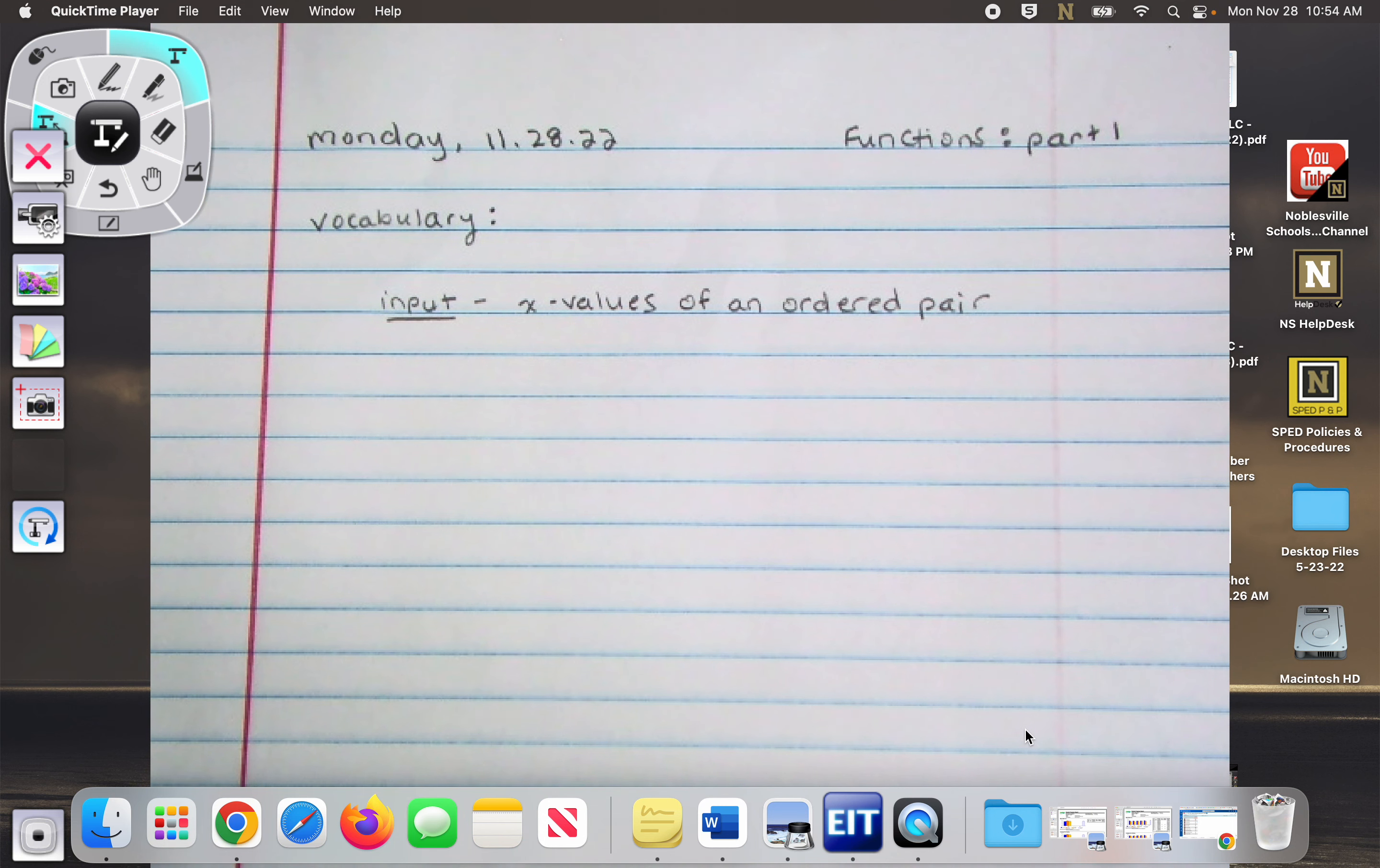Okay, so our first vocab word, Wes and Leo, you need a piece of paper out, you need to be working. Okay, let's get caught up.